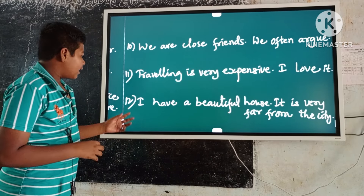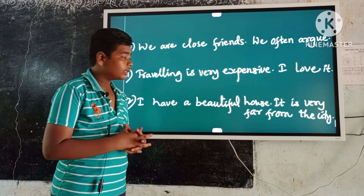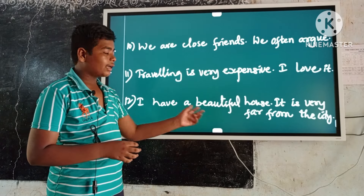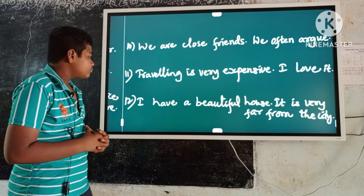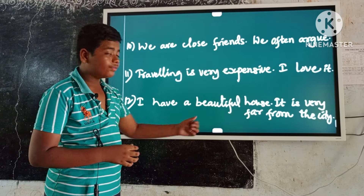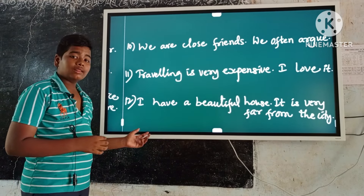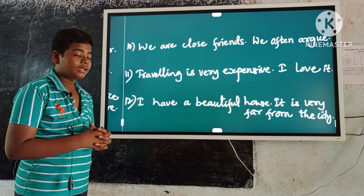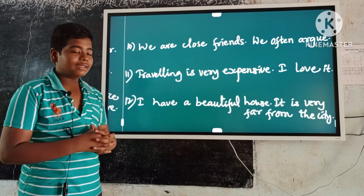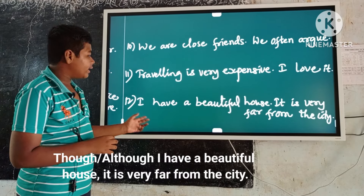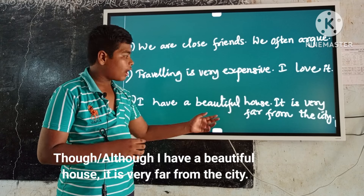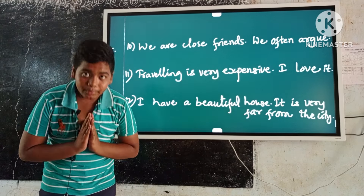Example number twelve: I have a beautiful house. It is very far from the city. These are contrast ideas. Here the first occurring sentence is 'I have a beautiful house.' Keep though or although before it, and a comma before the second sentence. So the answer is: Though or although I have a beautiful house, it is very far from the city. Thank you.